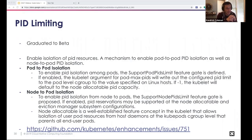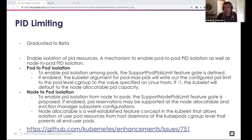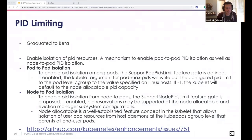PID limiting: PIDs are fundamental Linux resources, and it's trivial to hit the task limit without other resource limits, destabilizing the host. Administrators need mechanisms to ensure users and pods can't cause PID exhaustion, which would prevent host daemons like the container runtime and kubelet from running. Support pods limit is now no longer feature-gated. Nodes can now allocate PIDs as a well-established feature in the kubelet, allowing isolation of user pod resources from host daemons at the kubepods cgroup level.